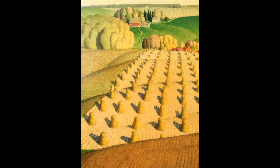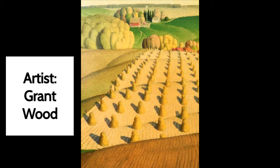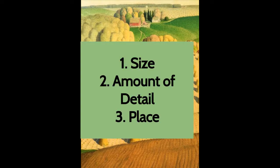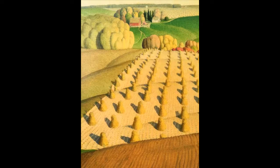The last landscape we'll look at in this video is from Grant Wood. This landscape shows all three ways to create distance: different size, different amount of detail, and place. Notice how the size of the objects change and get smaller as they get farther away. In fact, one haystack in the front, if you measure it, is about the same size as the house or some of the small faraway trees. With amount of detail, again we can see some texture in the very close part, but no texture in the far away.